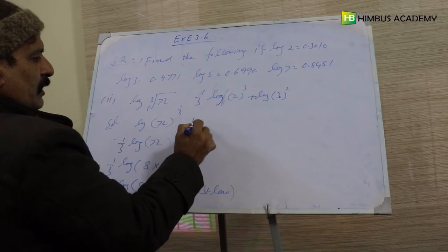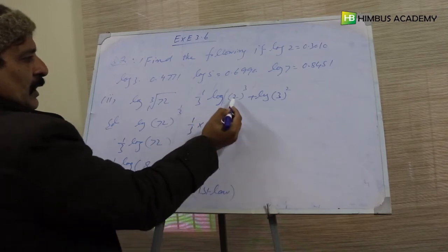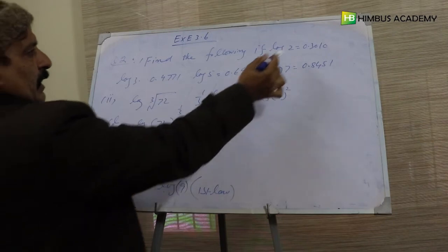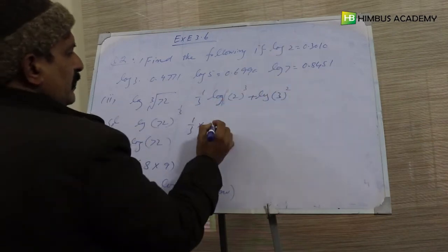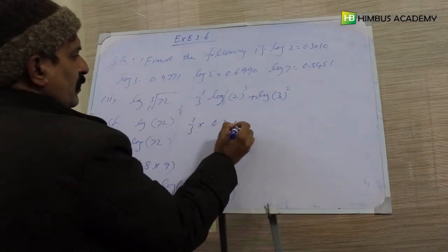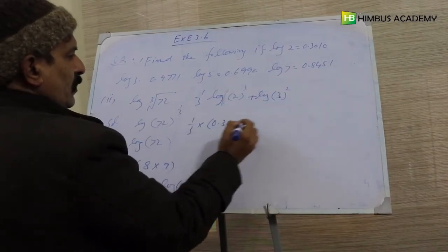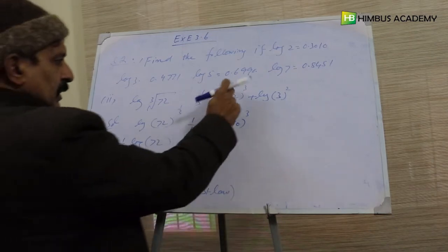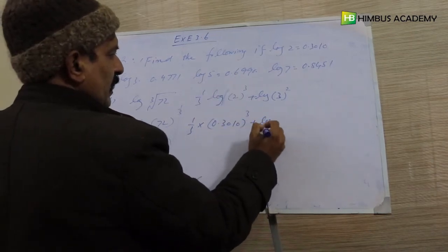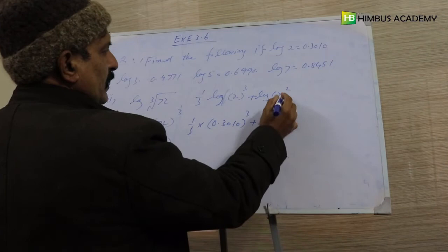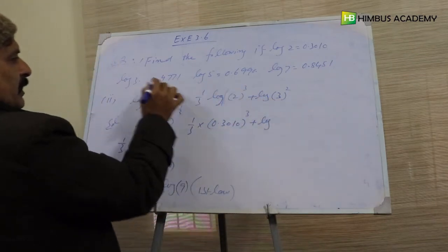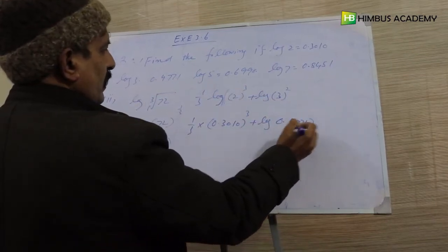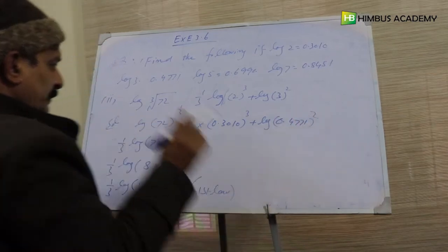تو یہ بن گیا: one over three times (log of 2 cube plus log of 3 square)۔ Putting values: log 2 کی value 0.3010 اور log 3 کی value 0.4771۔ So: one over three times (3 × 0.3010 plus 2 × 0.4771)۔